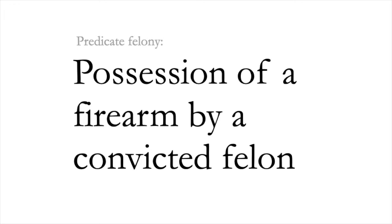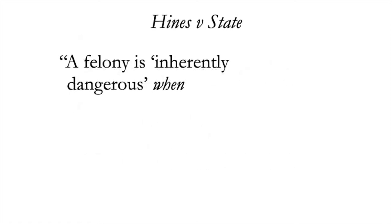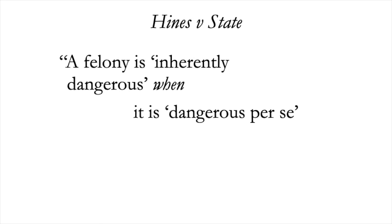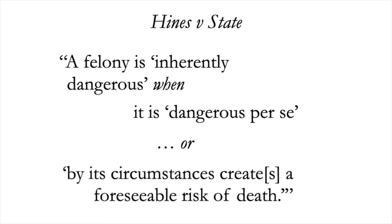Under the abstract approach, as in Phillips, mere possession of a firearm, even by a convicted felon, would likely not count as inherently dangerous. But Georgia takes a different approach. In Georgia, a felony is inherently dangerous when it is dangerous per se — essentially the abstract approach — or when, by its circumstances, it creates a foreseeable risk of death. The Hines court held that the defendant's firing his shotgun in the circumstances created a foreseeable risk of death. Therefore, his possession of the firearm as a felon was an inherently dangerous felony.